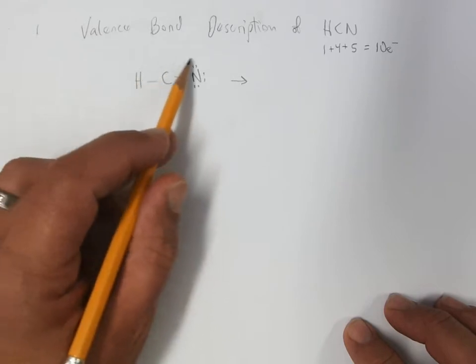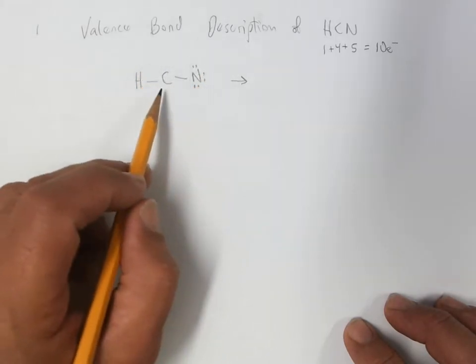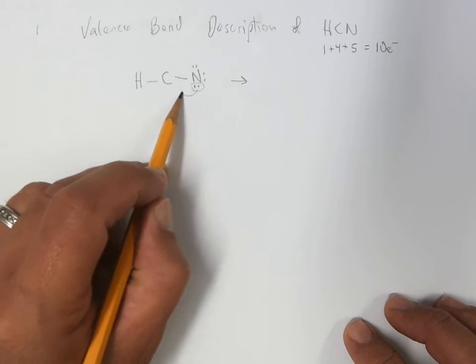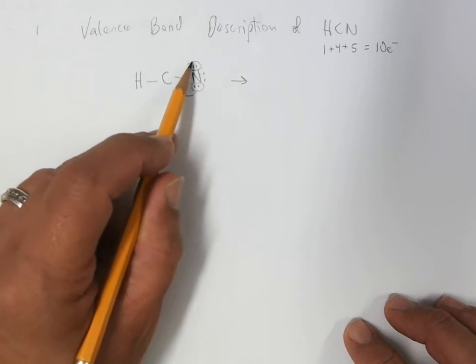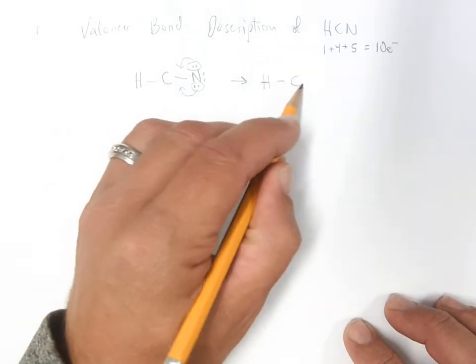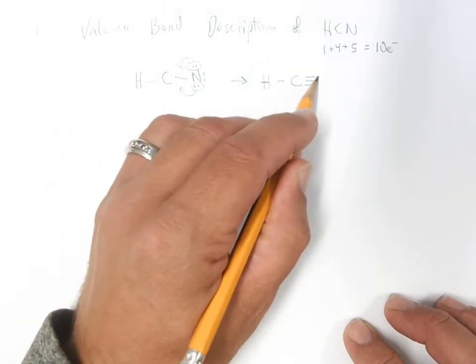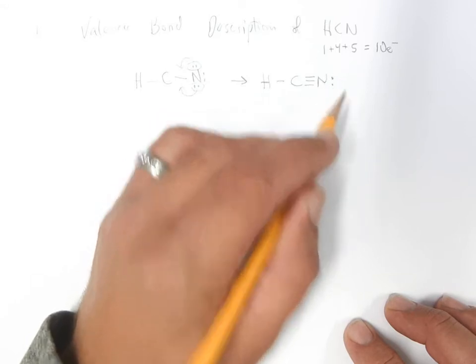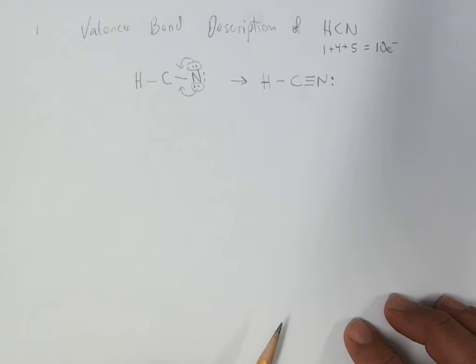But if not, there's our 10 electrons all in the framework. And to fill the octets of the carbon, it needs to share from nitrogen. So HCN, the way this works out, so all the octets are filled. And you have the right number of electrons. You have a triple bond between carbon and nitrogen.